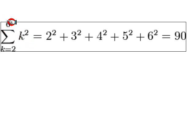So, we go up to 6, and we start at 2. That means K equals 2. So we fill in the K, right? 2 squared, 3 squared, 4 squared, 5 squared, 6 squared equals 90.